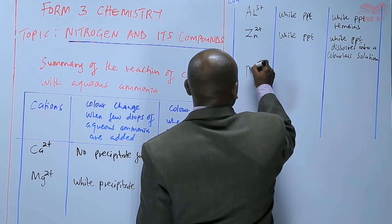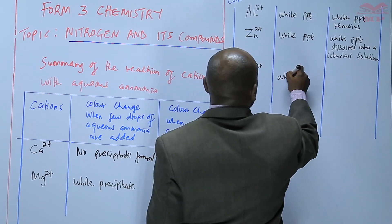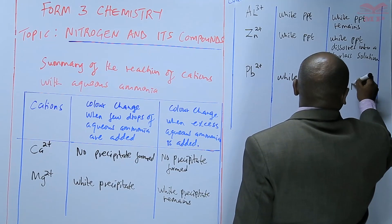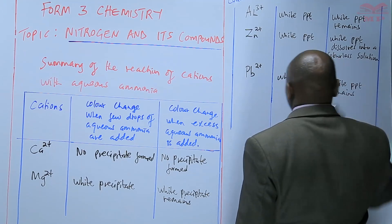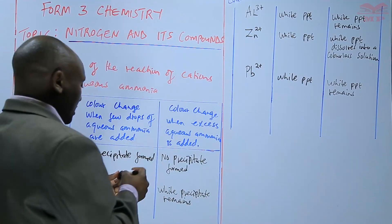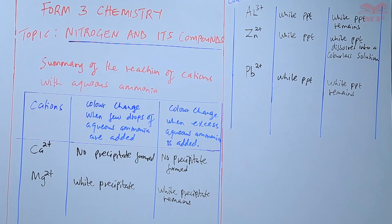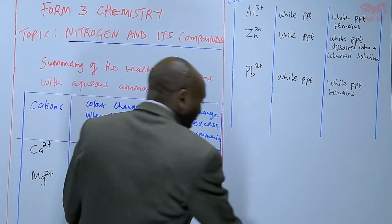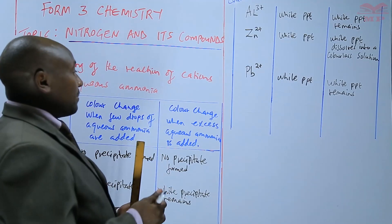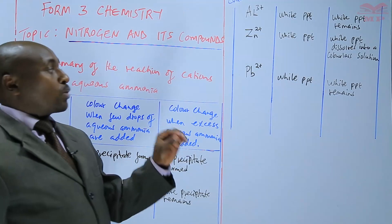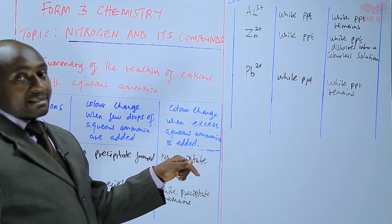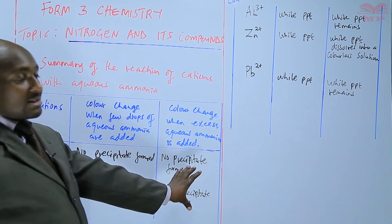Lead(II) ions also form a white precipitate, but the white precipitate remains — it doesn't dissolve. So unlike zinc, where the white precipitate dissolves with excess aqueous ammonia, lead(II) precipitate stays. This forms the basis of a chemistry practical section called qualitative analysis, whereby when you are given a solution, you can identify which cations are present by adding a few drops or excess aqueous ammonia and observing the color of the precipitate.